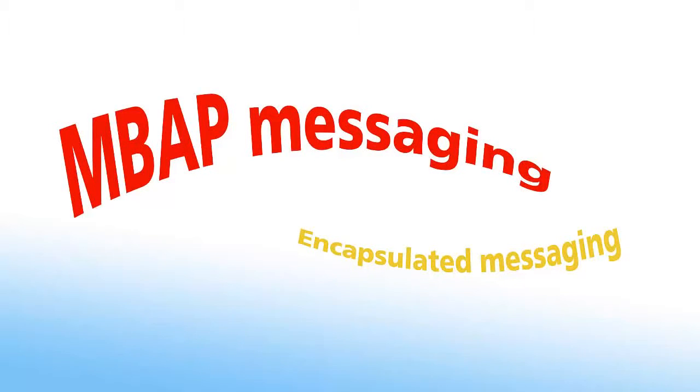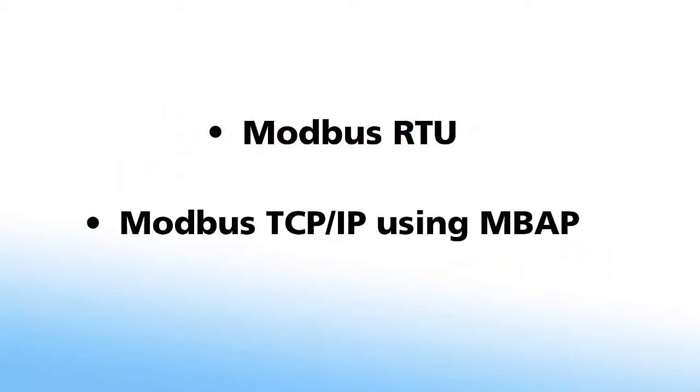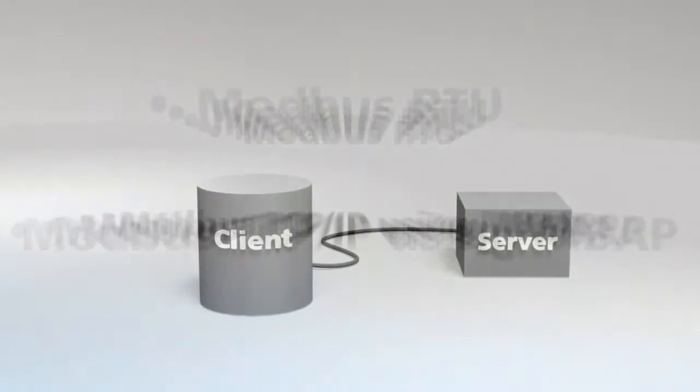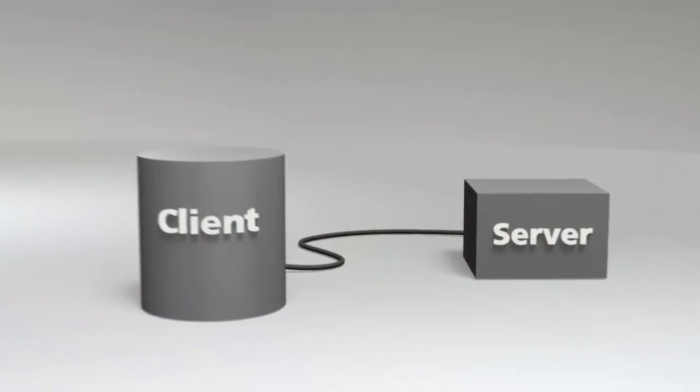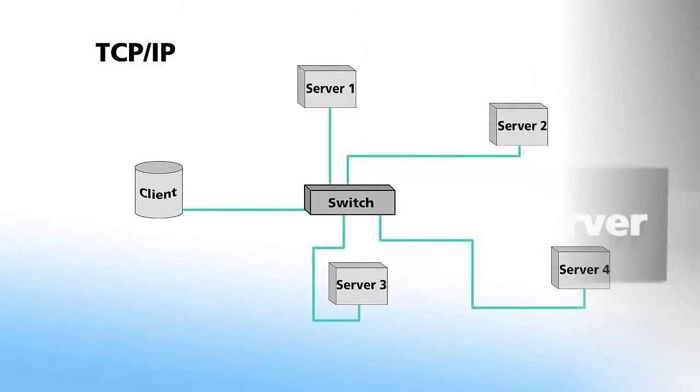MBAP messaging is by far the most popular Modbus TCP IP communication method. So for this video, we'll be focusing on Modbus RTU and Modbus TCP IP using MBAP. Modbus TCP IP uses the terms client and server instead of master and slave. The TCP IP network consists of the client connected to a switch or a series of switches to which all the servers on the network are also connected.